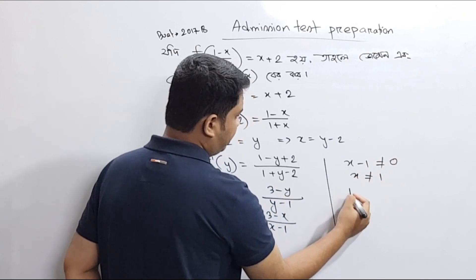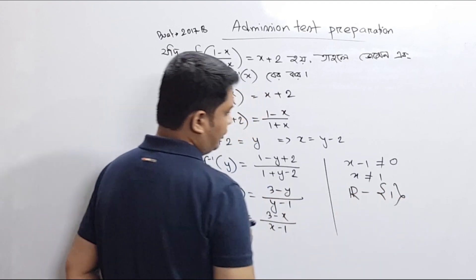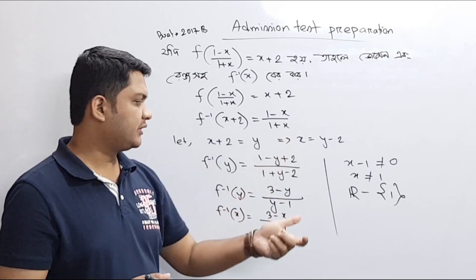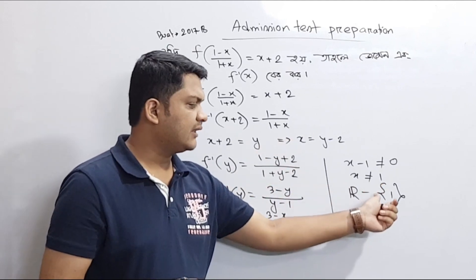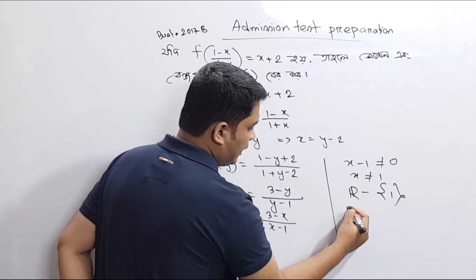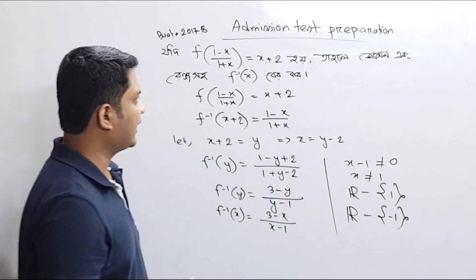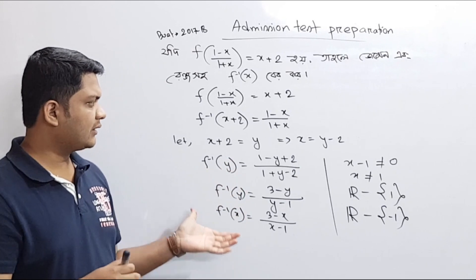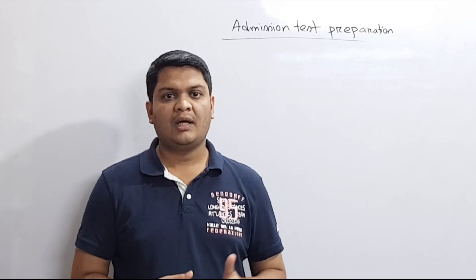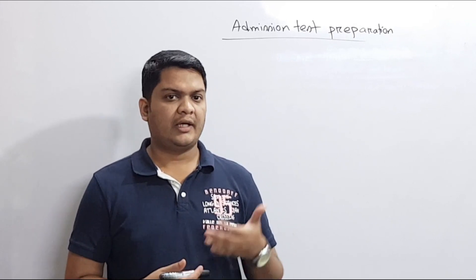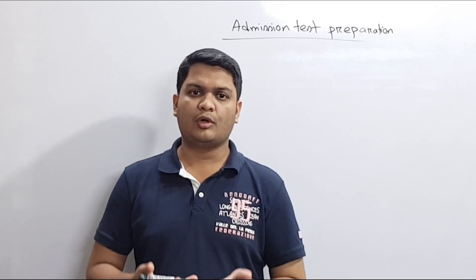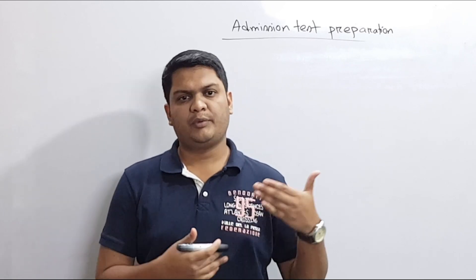So the domain of the inverse function excludes 1. This relates back to the original function's range, which also excluded minus 1. So we have worked out all three parts of the problem. If you have any questions, please leave a comment.